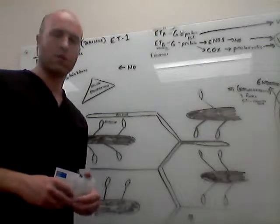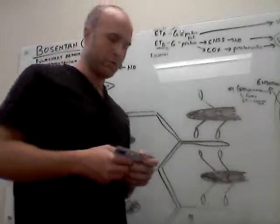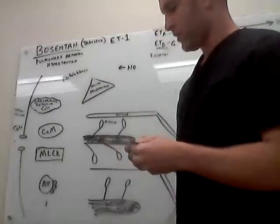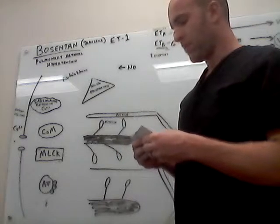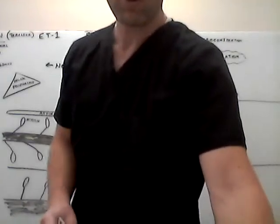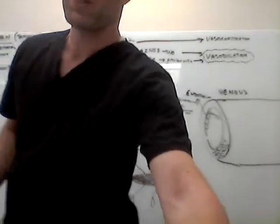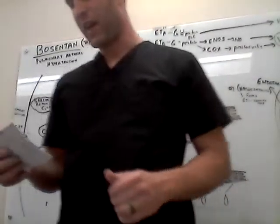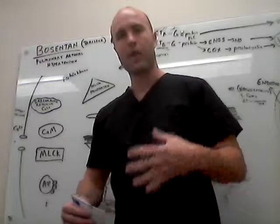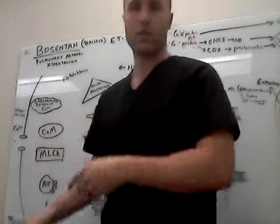We're discussing cardiovascular pharmacology, particularly Bosentan, a drug also called Traclear. Bosentan is an endothelin antagonist. First of all, I'm going to tell you when you're going to use this. You're going to use Bosentan in the case of pulmonary arterial hypertension. You can give them Bosentan to treat that.